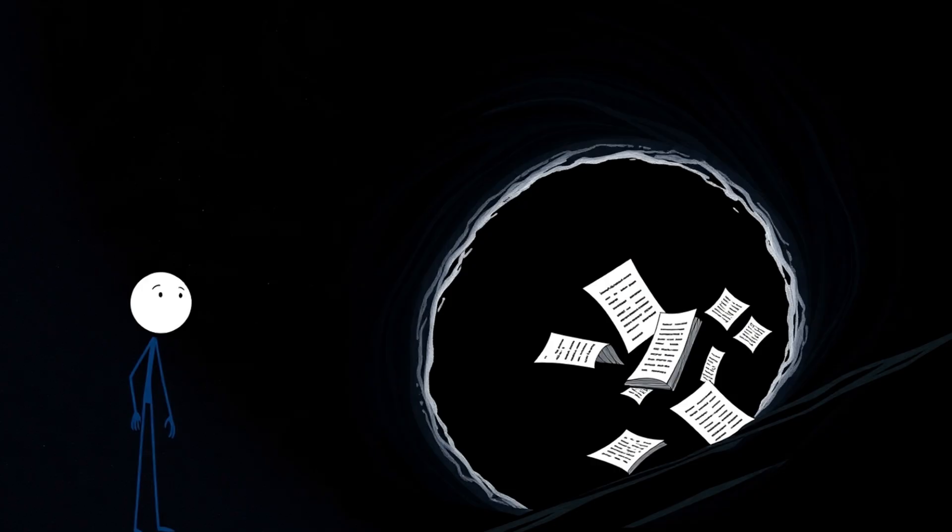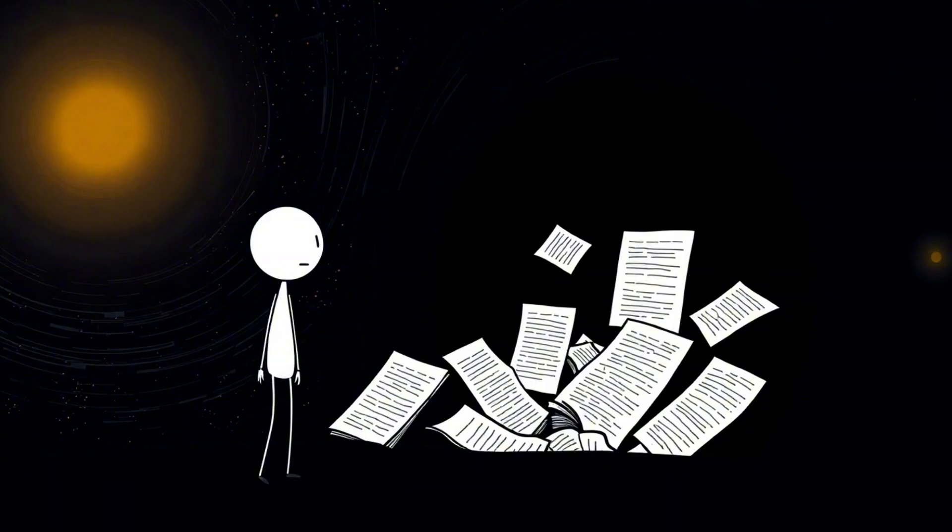Number 2. The Black Hole Information Paradox. One of the biggest bugs in modern physics. Can information actually disappear? Quantum mechanics insists no. It can only transform, never vanish.